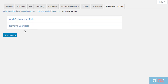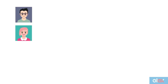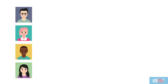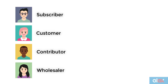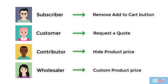First up is the role based settings. These settings help in removing or customizing the add to cart button, hiding product prices, cart, and checkout pages based on user roles. For example, you might want a custom user interface for subscribers, customers, contributors, and wholesalers — like removing the add to cart button for subscribers, letting customers request a quote, hiding product prices for contributors, and setting custom product prices for wholesalers.